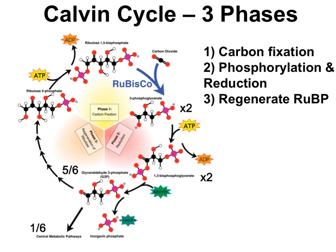The Calvin Cycle can be overwhelming. So, to make the Calvin Cycle more manageable, we're going to break it down into three phases. Phase 1: carbon fixation. Phase 2: phosphorylation and reduction. And Phase 3: regeneration.